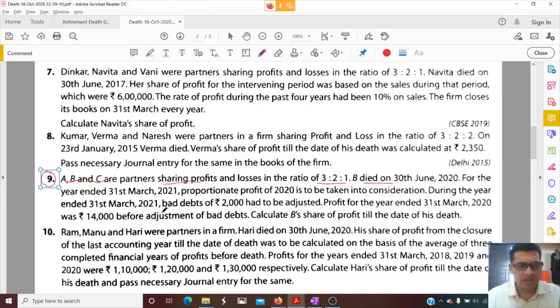For the year ended 31st March 2020, proportionate profit of 2020 is to be taken into consideration. So previous year profit we need to take. During the year ended 31st March 2021, bad debts of 2000 had to be adjusted. Profit for the year ended 31st March 2020 was 14,000. So this profit we need to take, we need to consider.